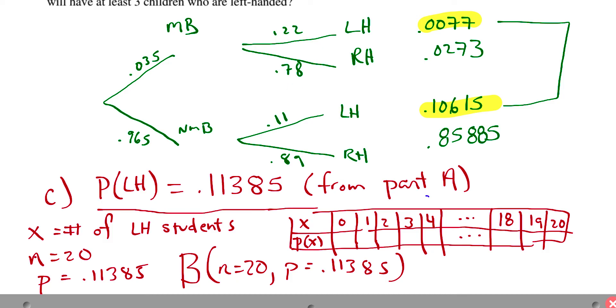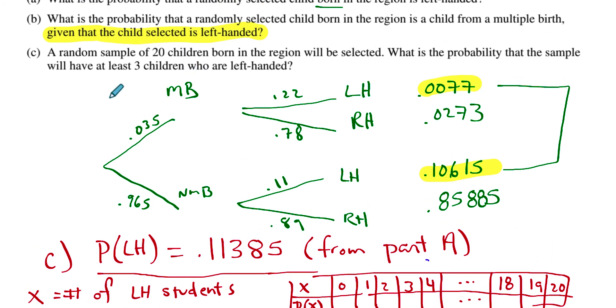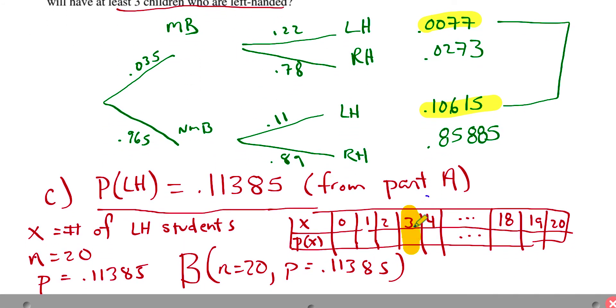Now in the table, they're asking, the question asks, what is the probability of have at least three children who are left-handed? So at least, let's get the highlighter out here. At least three means we want this part of the table, the probability that we have that part there. Now what you could do is you could find each one of these probabilities individually, add them all together, that's 17. We don't want to do that. It's probably smarter to get 0, 1, and 2, and you subtract. Remember, all these probabilities have to add up to 1. So I would use, in my calculator, a binomial CDF. I'm going to write this out.